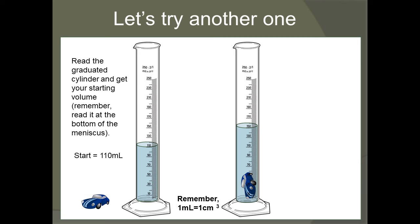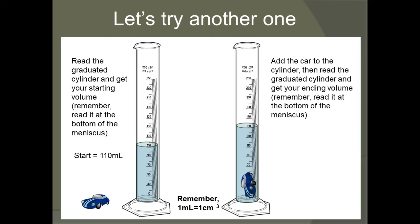Now, we need to get our ending volume. So what we're going to do is add the car to the cylinder, then read the graduated cylinder to get our ending volume. Remember, read it at the bottom of the meniscus. I'm going to give you a few seconds to go ahead and read the graduated cylinder with the car in it to get your ending volume.